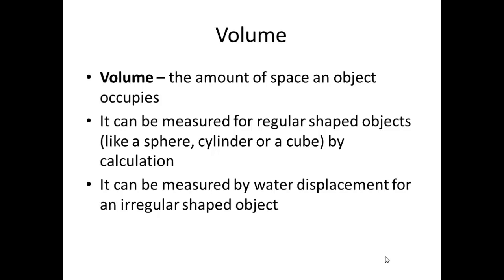For regular shaped objects like a sphere, cylinder, or cube, you guys talked about this in geometry. So you guys will talk more about volume by calculation. It can also be measured by water displacement, which we're going to talk about momentarily, for an irregular shaped object. Moving forward — volume by calculation. These are a couple of examples. For a sphere, the formula is four-thirds pi times the radius cubed.